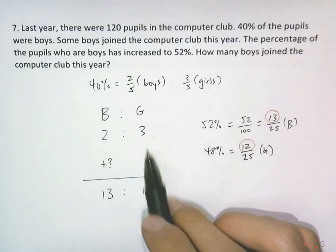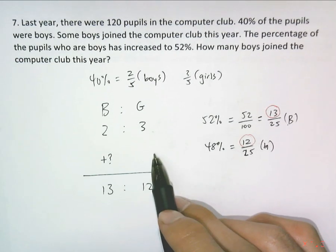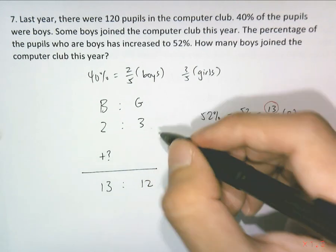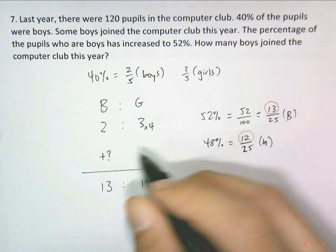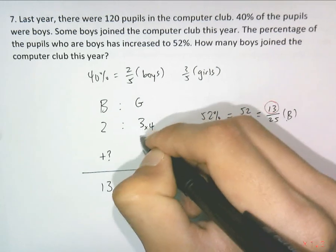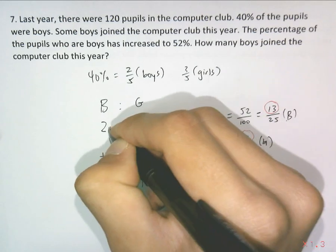Since the number of girls does not change—no girls joined or left the club—we change it into the same number. 3 is smaller, so multiply by 4 to give us 12 units. Multiply by 4 for both ratios.